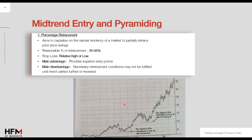This strategy targets the idea that even if you missed the beginning of a trade, you can still enter any time price retraces — but not randomly. It needs to be at a precise percentage. According to this strategy, the pullback or retracement should be around 35% to 65% of the move. If it goes above 65%, you shouldn't enter.